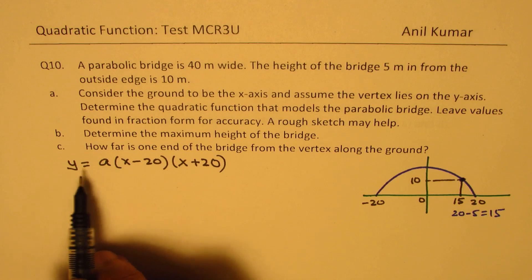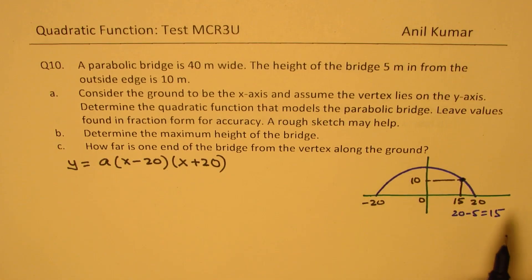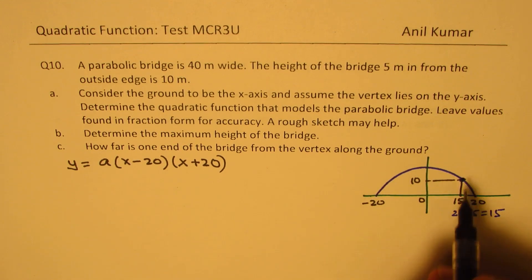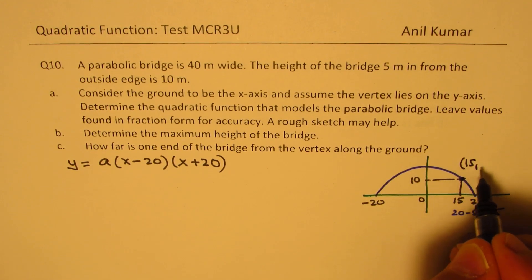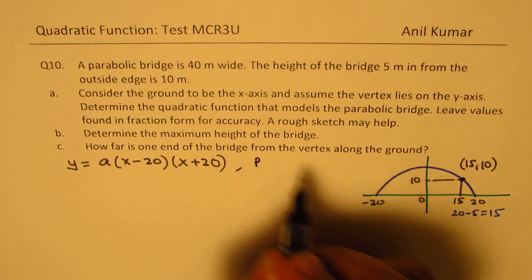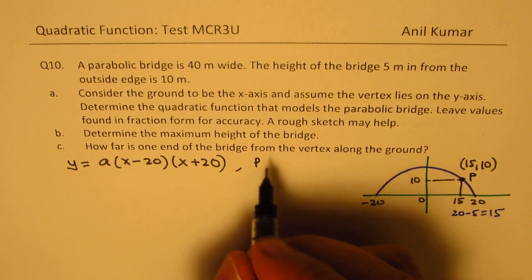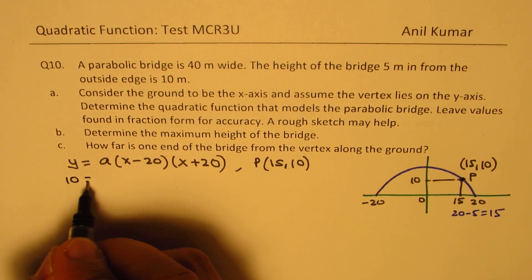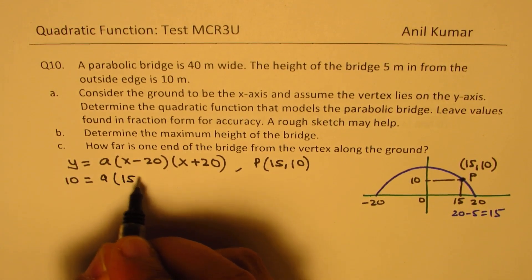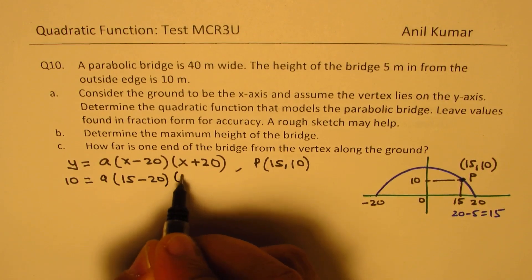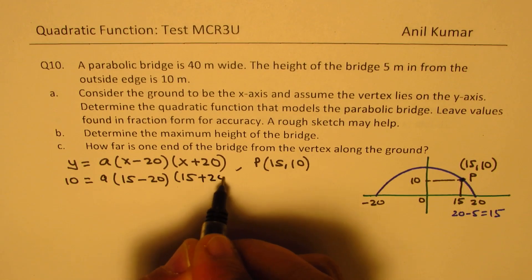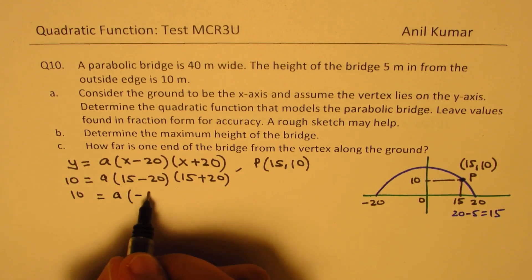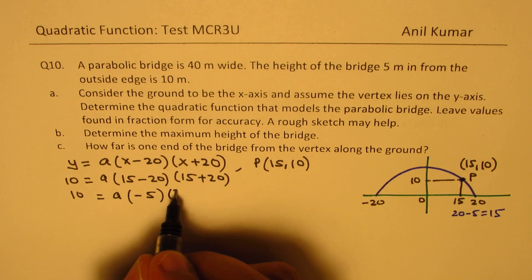To find the value of a, we will use this point given to us, which is 15, 10. So to find the value of a, we will use this point, which is 15, 10. So we will use the point p. Let's call this point p. 15, 10. So that means y is 10. A, 15 minus 20 times 15 plus 20. So we have 10. A times, this is minus 5, and that is times 35.